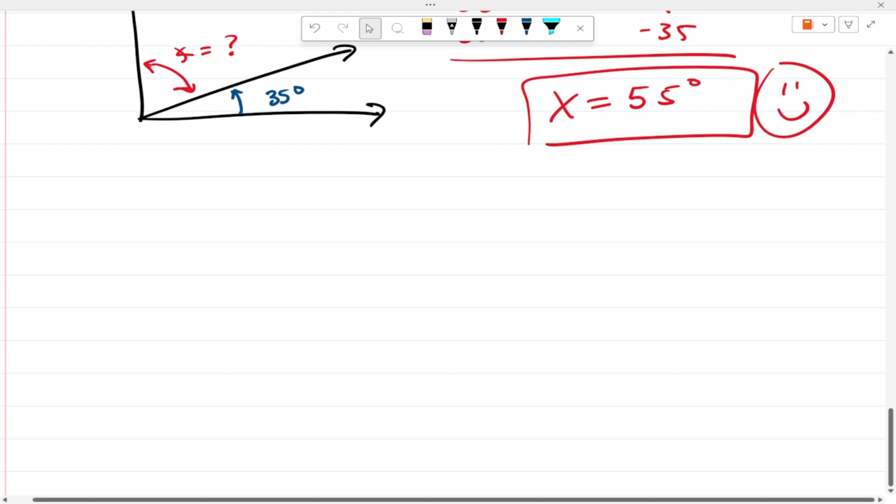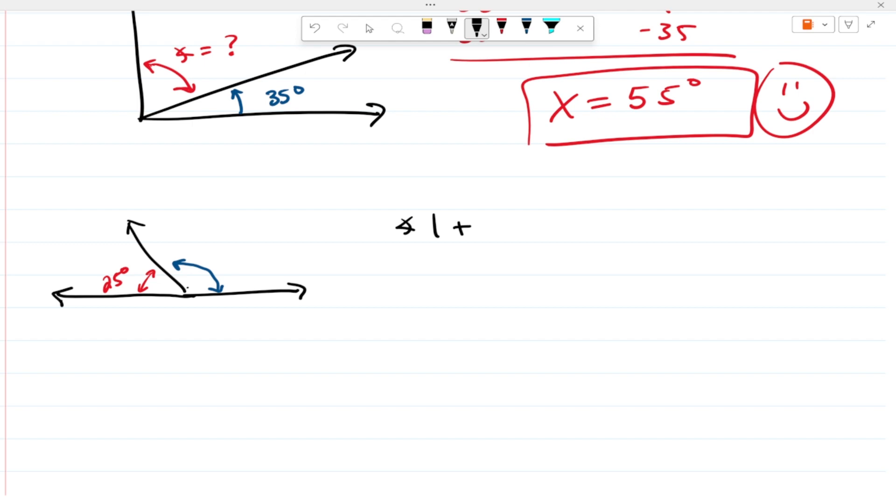Now, we do have another relationship here. And that's in this example. So, let's say we have this. And we know this angle right here. Let's call it 25 degrees. What we want to know is, well, what is this angle? Well, when angle one plus angle two equals 180 degrees, these are called supplementary angles.